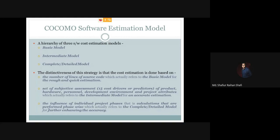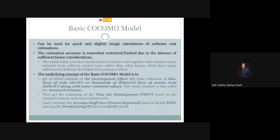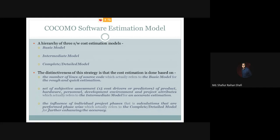So basically, COCOMO model refers to this hierarchy of cost estimation models: the basic model, the intermediate model, and the complete or detailed model. In the next tutorials we're going to study each of these — the basic COCOMO model, the intermediate COCOMO model, and the complete or detailed COCOMO model. I hope you have understood everything discussed in this tutorial. See you in the next tutorial where I'm going to start with the basic COCOMO model. Thank you.